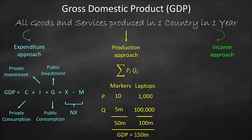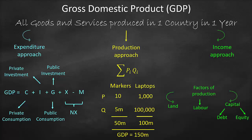Now let's look at the third approach — the income approach. We need to know our major factors of production. To produce anything, we need land, labor, and capital. Capital can be financed through loans, which is debt, or through savings and investor money, which is equity.